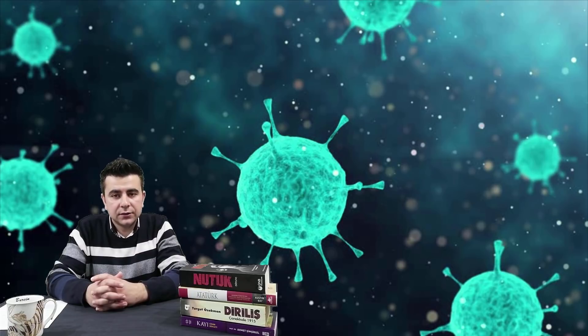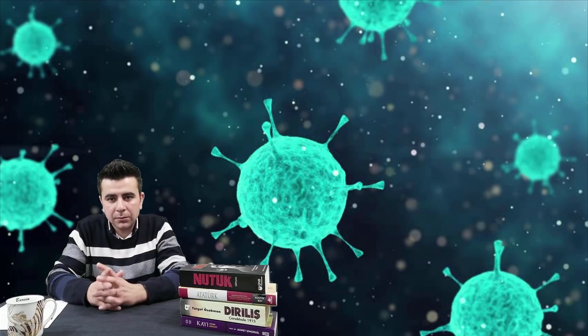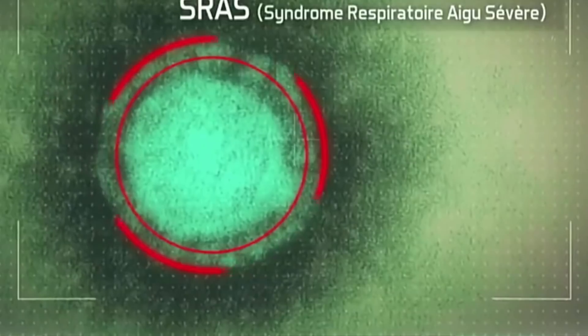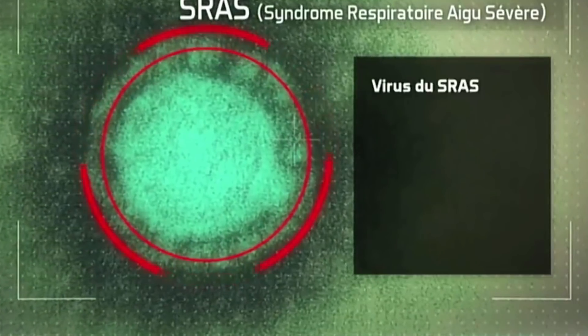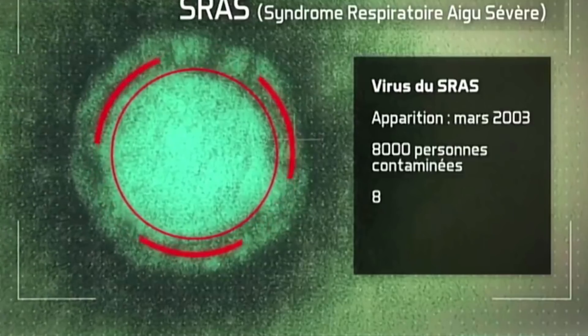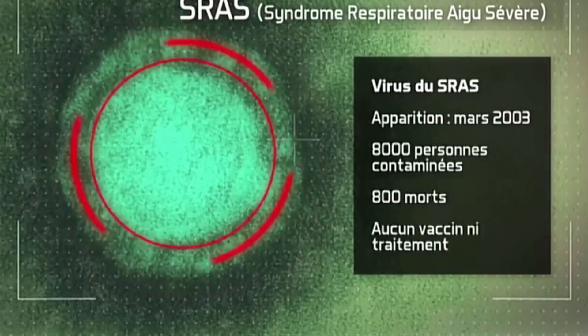Aslında daha önce de bu tür virüslere karşı sınavımızı vermiştik. 2003 yılında meydana çıkan SARS isminde bir virüs... Şiddetli akut solunum yetmezliğinin baş harflerini alan bir virüstür. Yine Çin'in doğu kısmında meydana çıkan bu hastalık, o zamanlarda bu hastalığa yakalananların sadece %10'u yaşamını yitiriyordu.